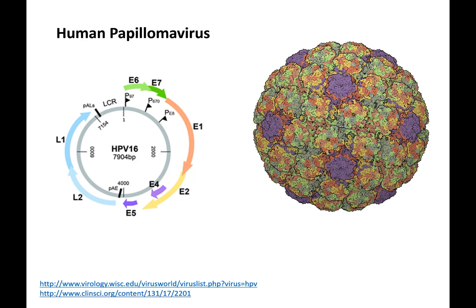HPV is about 60 nanometers in size — fairly small. For comparison, polio is 30nm, Ebola is about 80nm, and influenza is around 120nm. HPV is a naked virus with no envelope. Its genome is about 8,000 base pairs and it only encodes 8 genes.